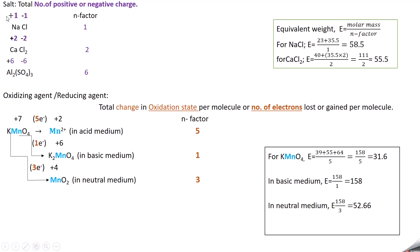For a salt, the N factor is given by the magnitude of the positive or negative charge. For sodium chloride: Na is +1, Cl is −1, so N factor is 1. For calcium chloride: Ca is 2+, 2Cl gives −2 total, so N factor is 2.